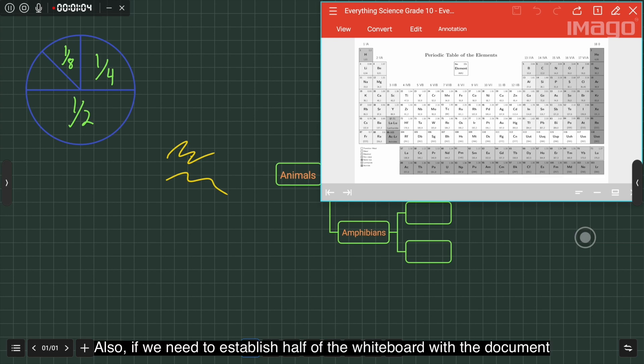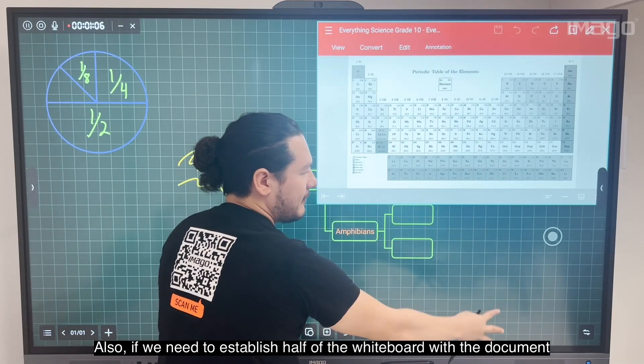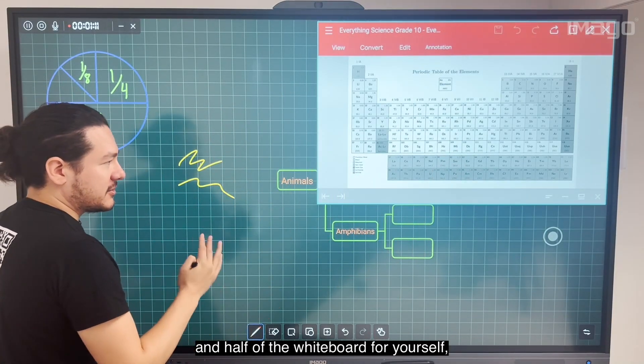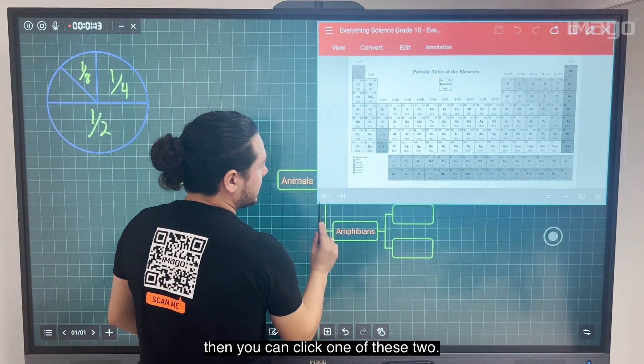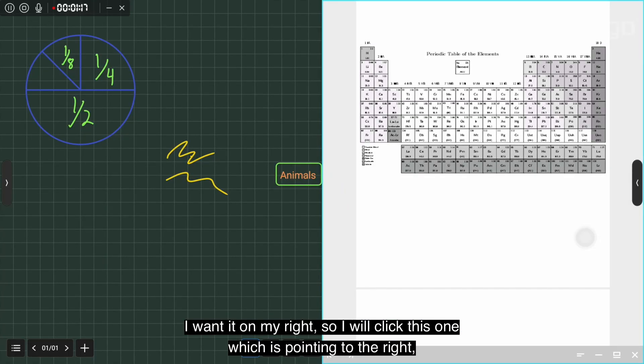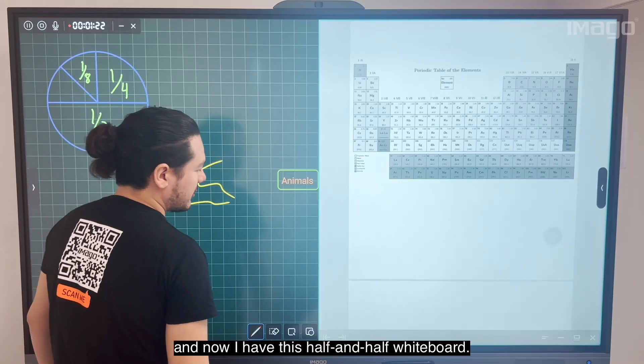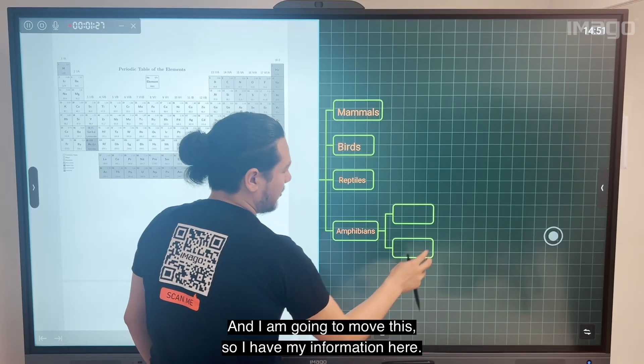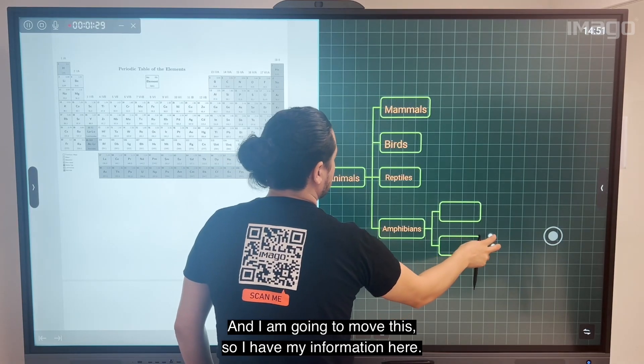Also, if you want to have only half of the whiteboard with the document and half for yourself, you can click one of these two. I want it on my right, so I click this one pointing to the right. Now I have this half and half whiteboard. If you want to change it the other way, just click the other one. I'm going to move this so I have my information here.